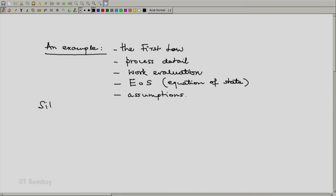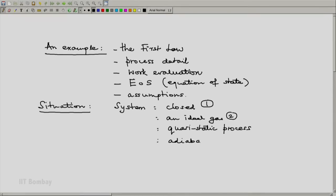Let us say that the situation that we are going to analyze is this. We have a system which is closed, which is the first piece of information. Then we are told that it contains an ideal gas, that's the second piece of information. The third piece of information is that it executes a quasi-static process which is also an adiabatic process. So here itself we have four pieces of information which are given to us.